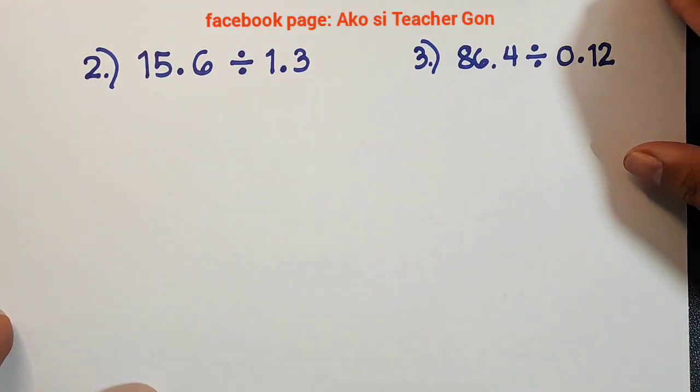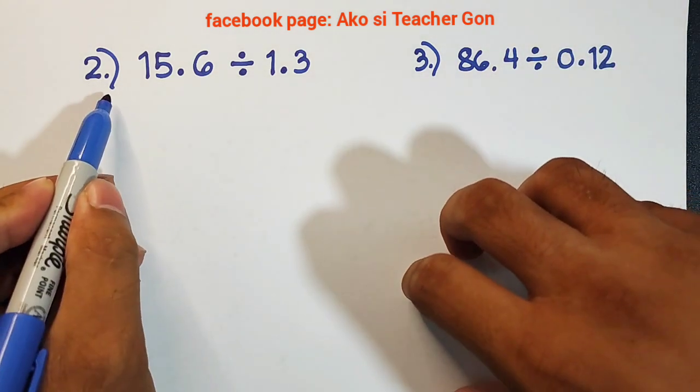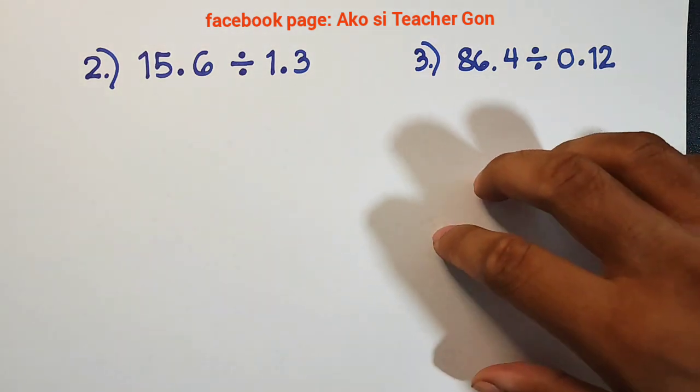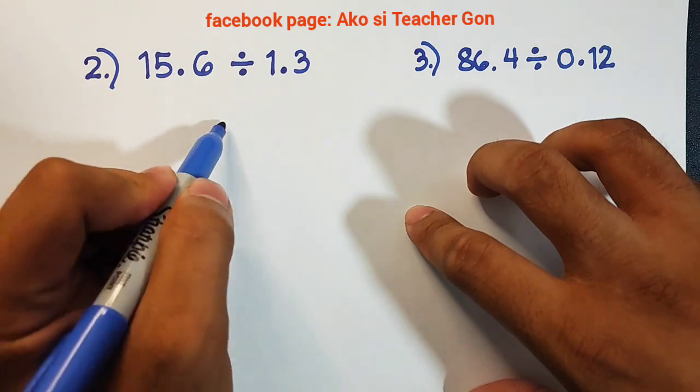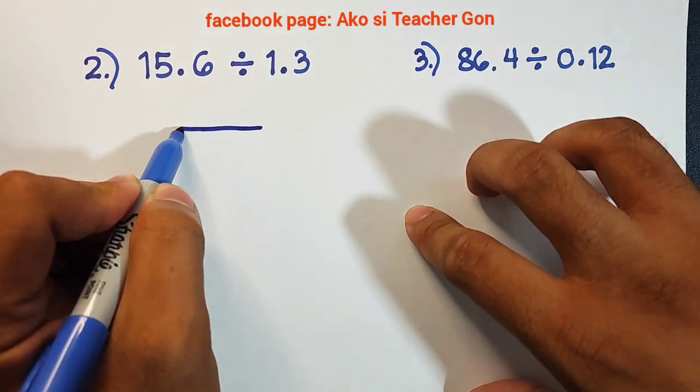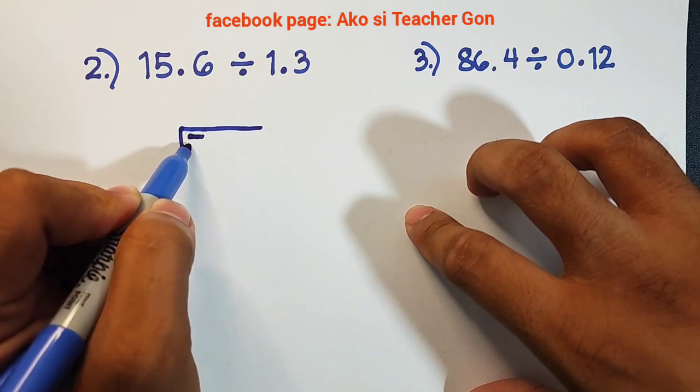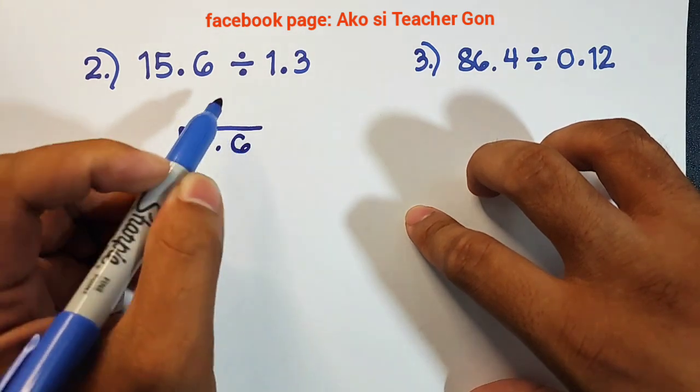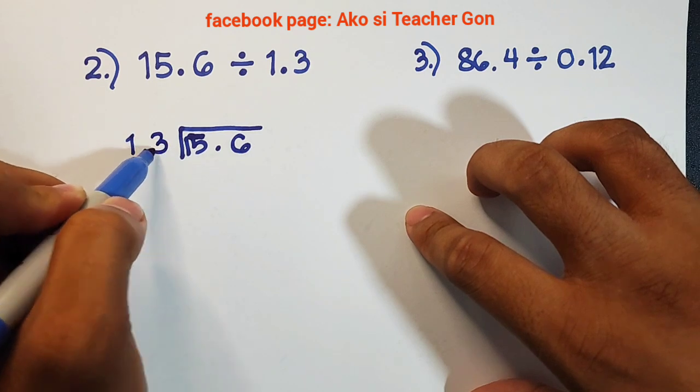We have here item number 2 and number 3. For number 2, we need to write first. This is your dividend. It will go here. We have 15.6 and your divisor will go here, 1.3.